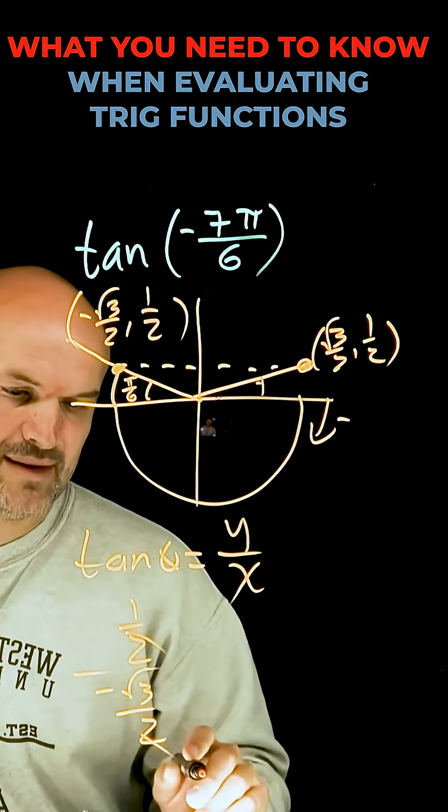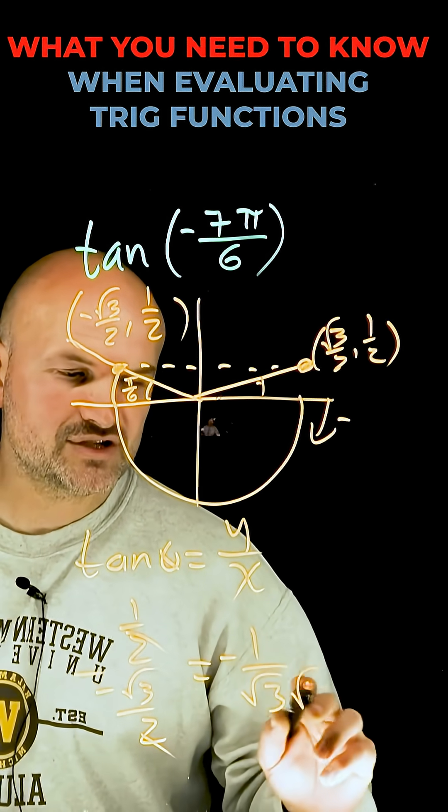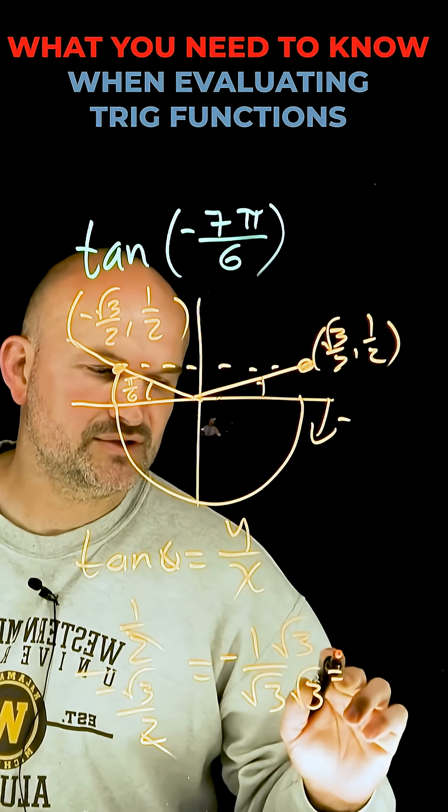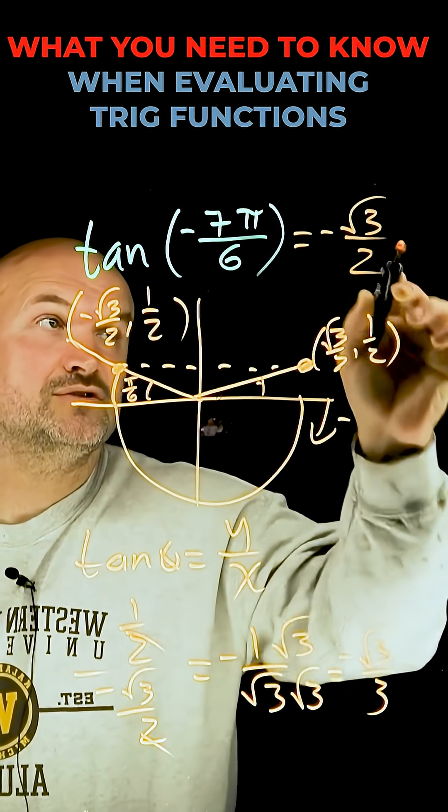Well since the numerator and denominator are both divided by 2, I can simplify that to a negative 1 over the square root of 3. Now I can rationalize the denominator and I'm simply going to get a negative square root of 3 over 3, and ladies and gentlemen, that is going to be the solution.